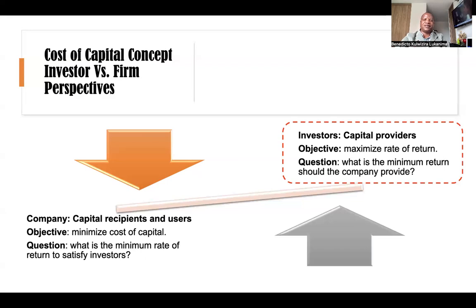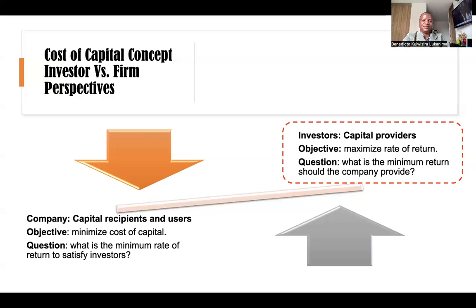Let's start with investors. They put money into companies. Why? They need return from their investments, so the objective is to maximize the return. They have one important question: what is the minimum return the company should provide to them, so they can be persuaded to inject funds into those companies?